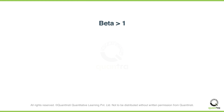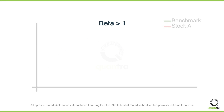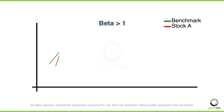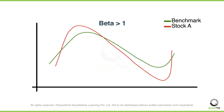If Beta is greater than 1, it means that the stock is more volatile than the benchmark. As you can see here, when the market is going up, stock A is outperforming, and when it's experiencing a downtrend, the fall in stock A is sharper.